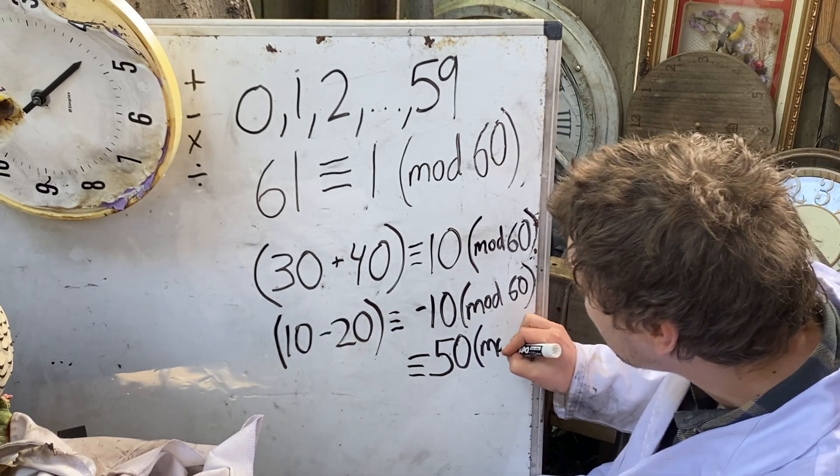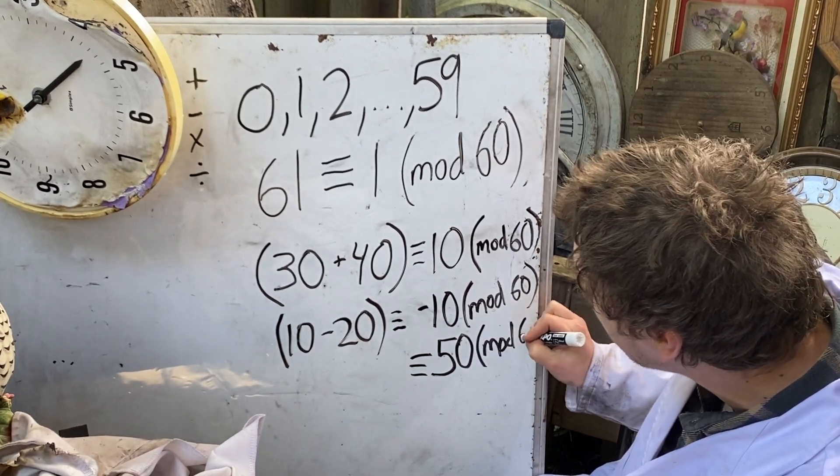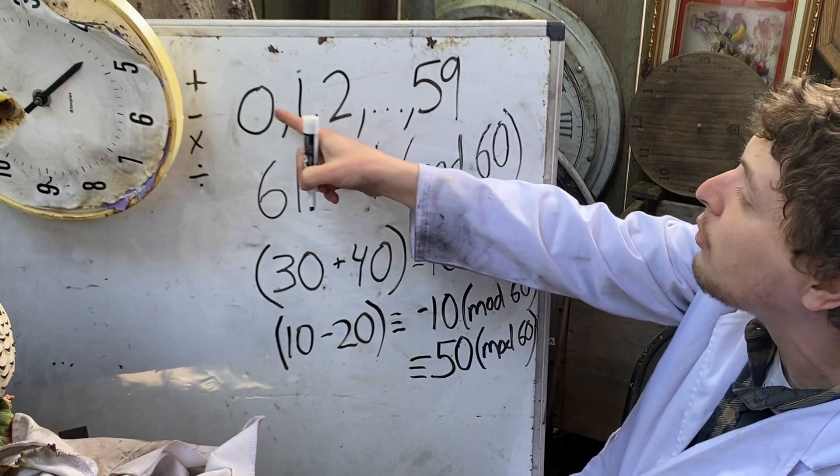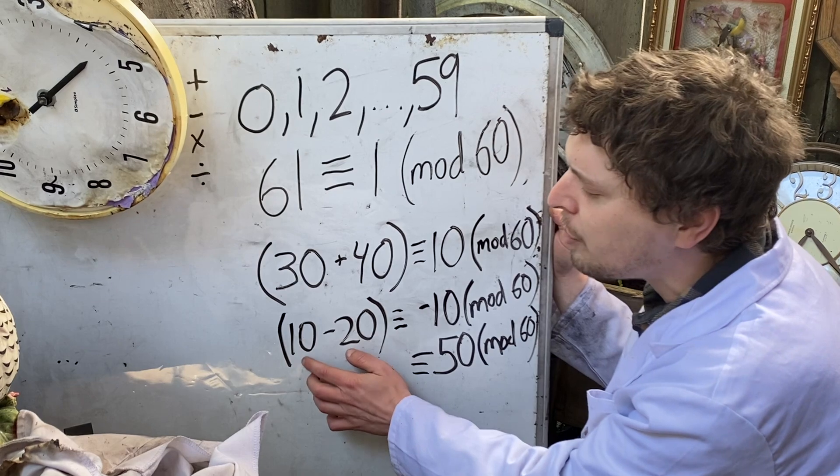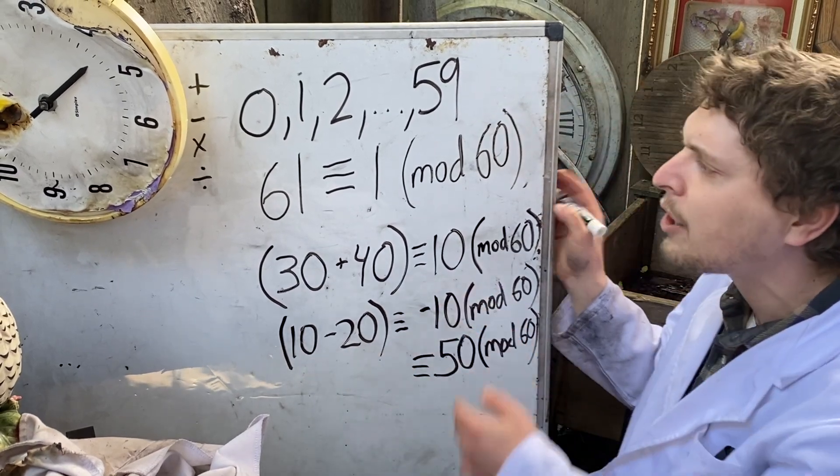So 10 minus 20, if we want to express it as one of the values in this set, we are able to. And same with any two integers that I applied subtraction to.